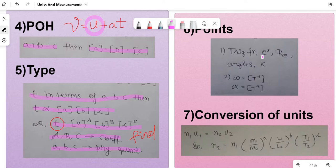In the next one, it will be a point you have to keep in mind. Trigonometric functions, e to the power x which means the exponential function, Reynolds number which comes in fluid dynamics, angles, and dielectric constant are all having no dimensions. And dimension of omega would be T^-1, and dimension of alpha would be T^-2.